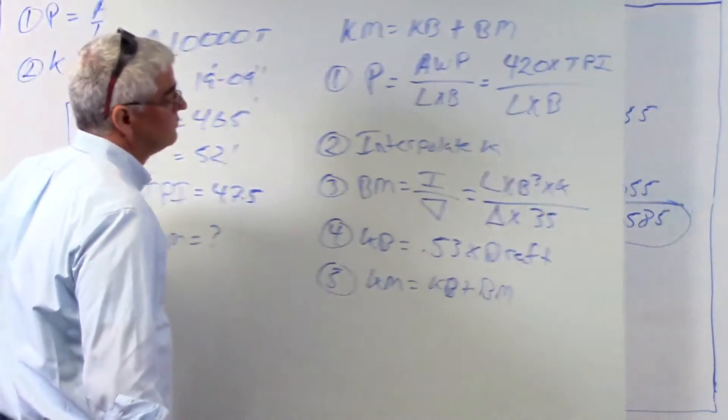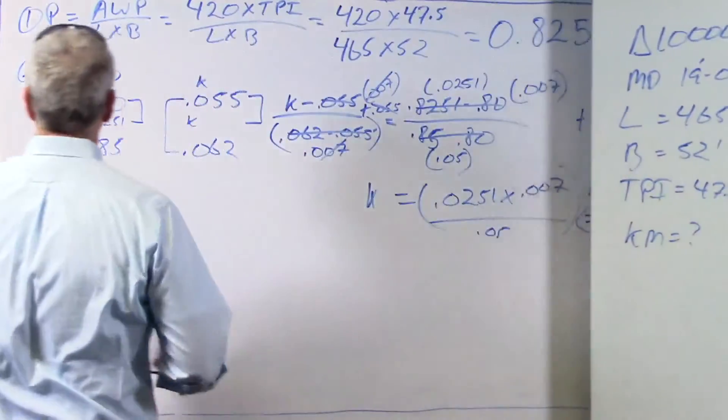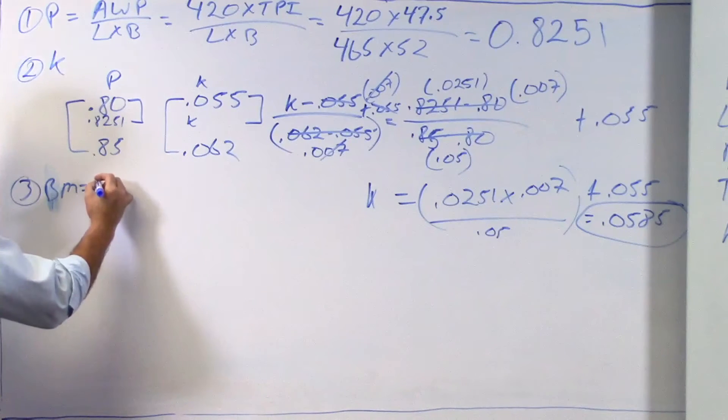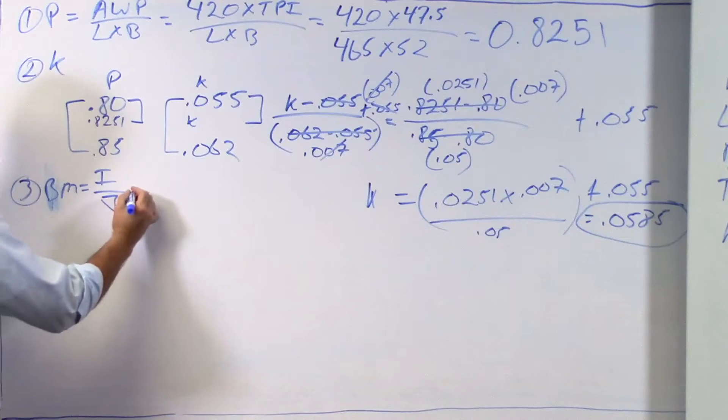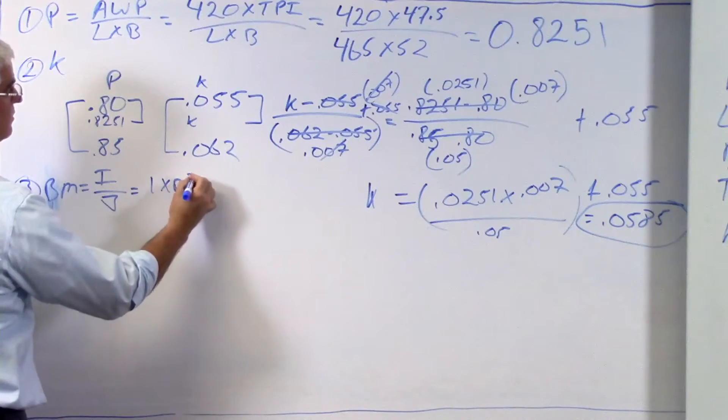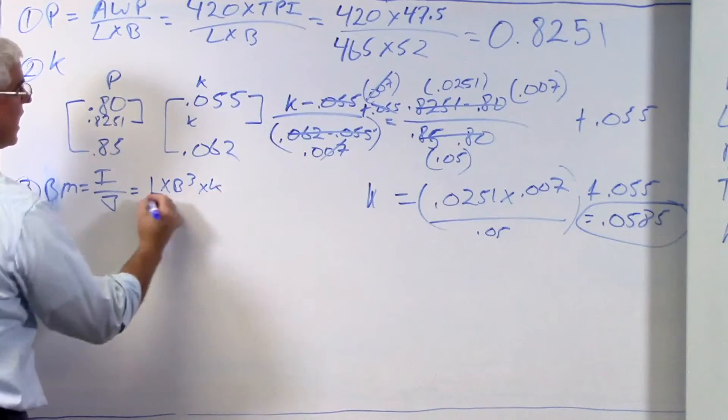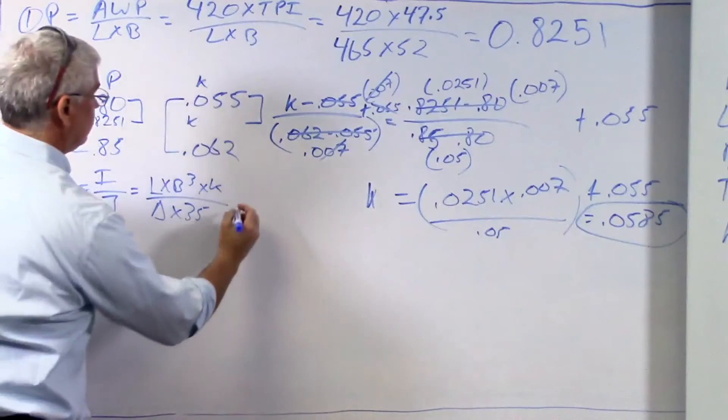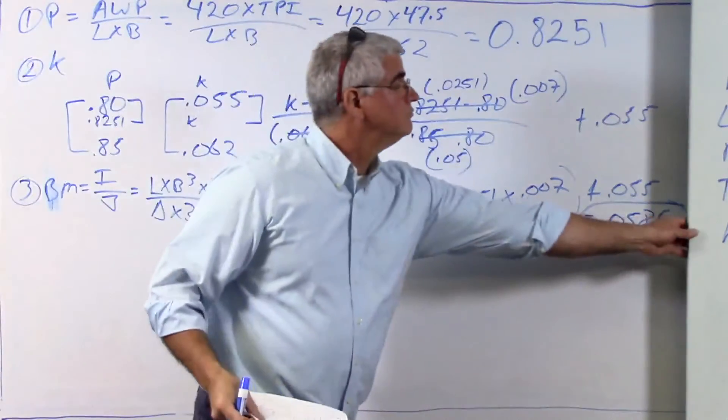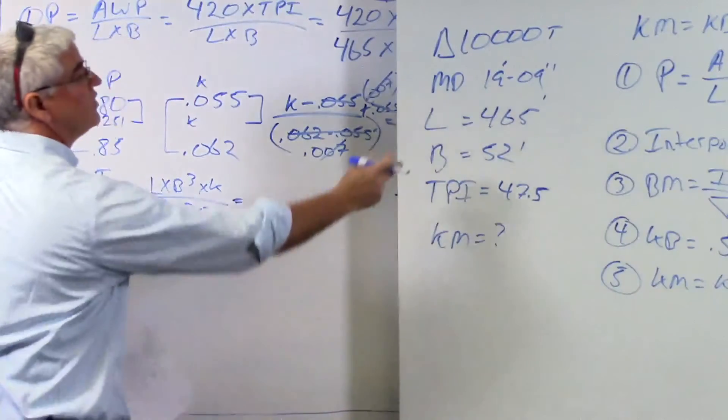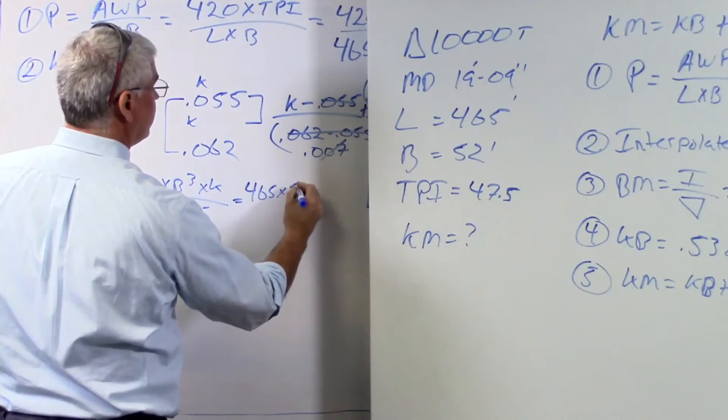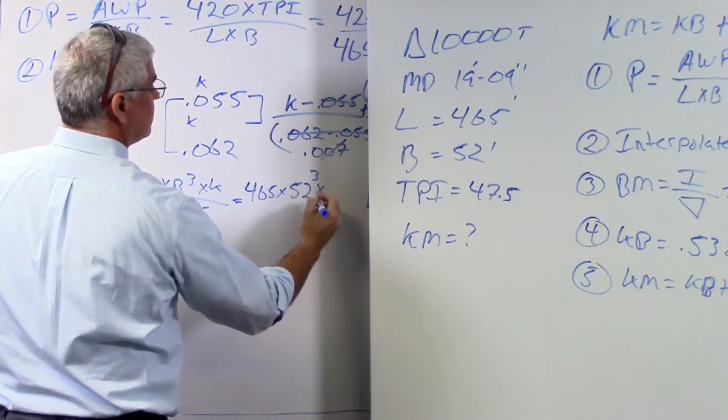So 3. Bm equals moment of inertia divided by the volume of displacement, which is, for a merchant vessel, length times beam cubed times k divided by the displacement times 35 for saltwater. So what's my length? Well, my length is 465 feet times 52. Don't forget, you've got to cube that times my value of k. And my value of k was 0.0585.